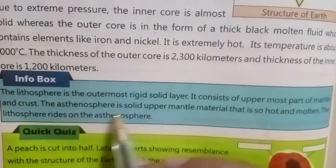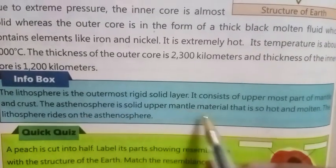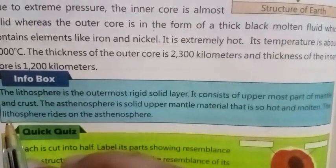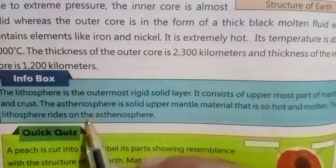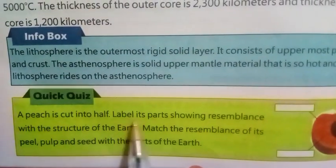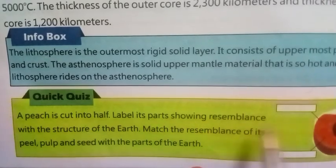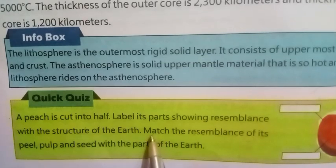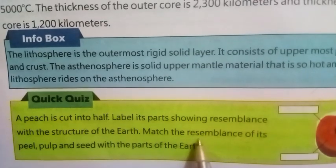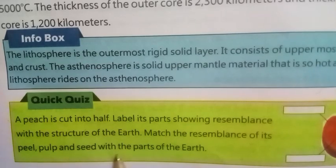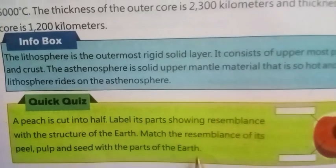The asthenosphere is solid upper mantle material that is so hot it behaves as molten, and the lithosphere rides on the asthenosphere. Quick quiz: A peach is cut into half — label its parts showing resemblance with the structure of the earth. Match the resemblance of its peel, pulp, and seed with the parts of the earth.